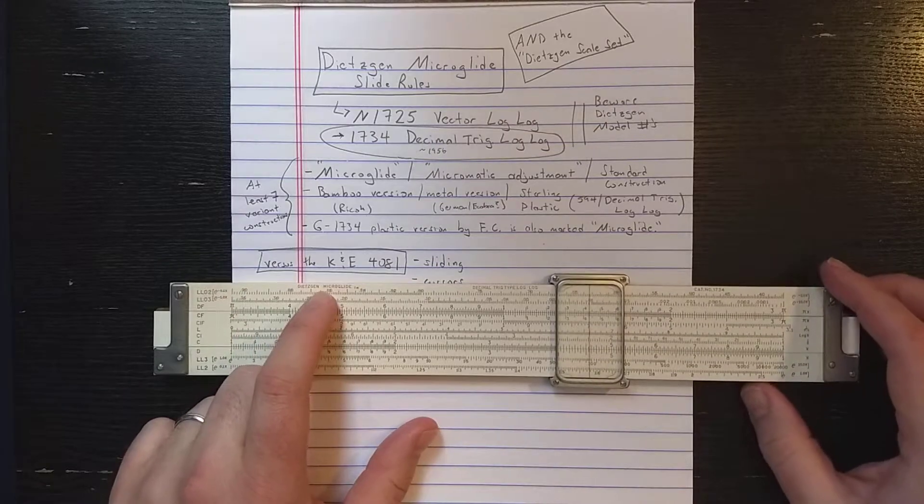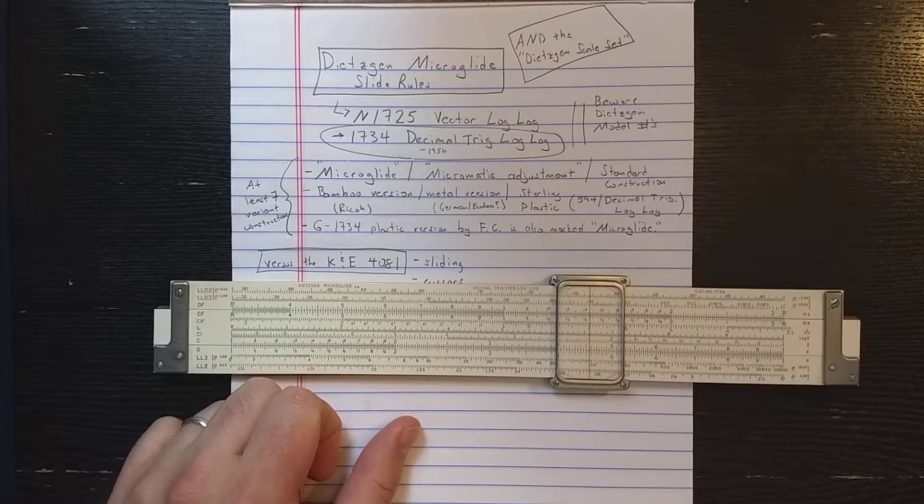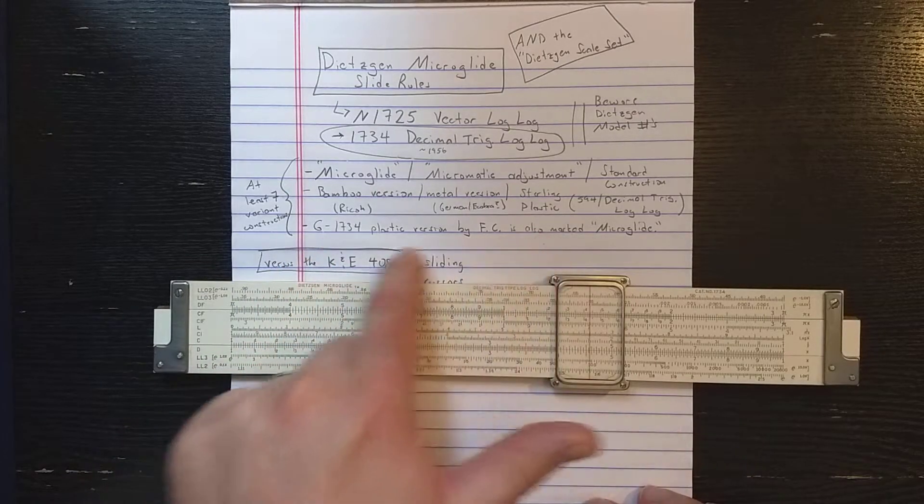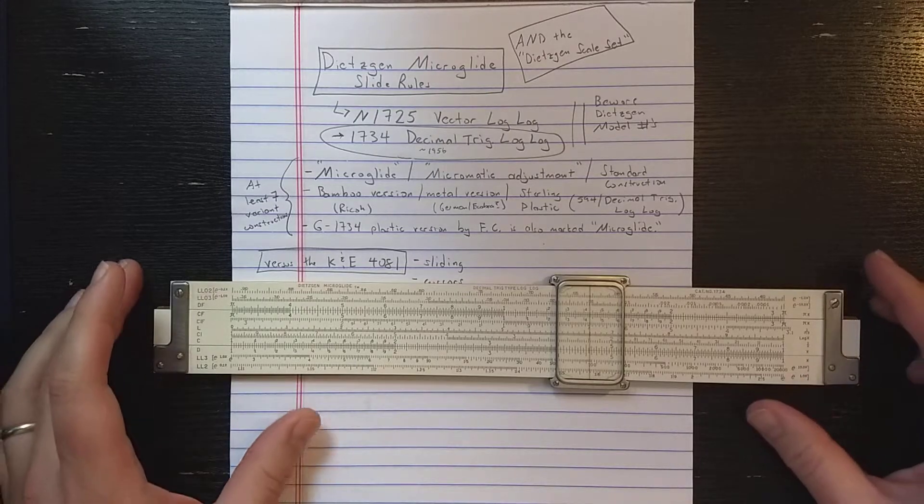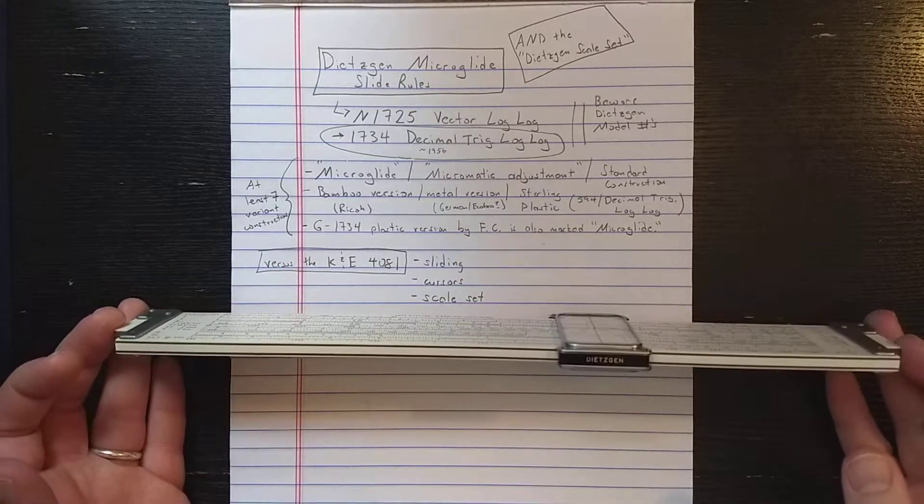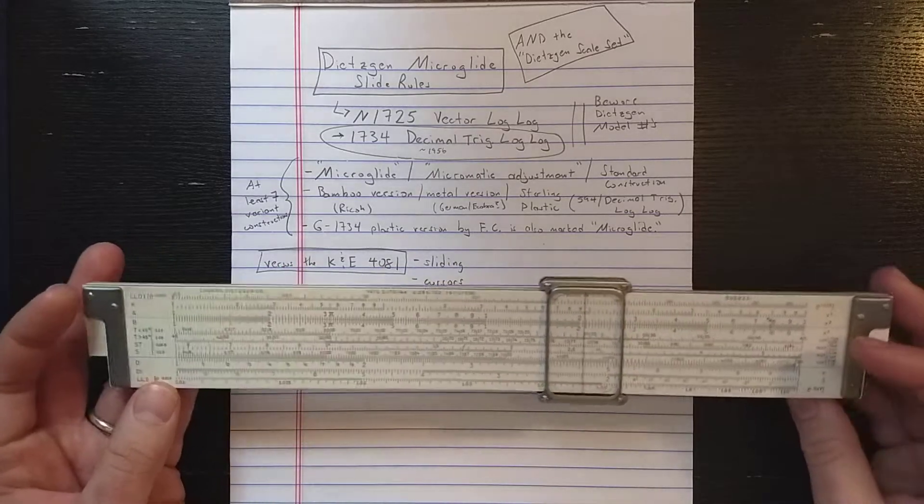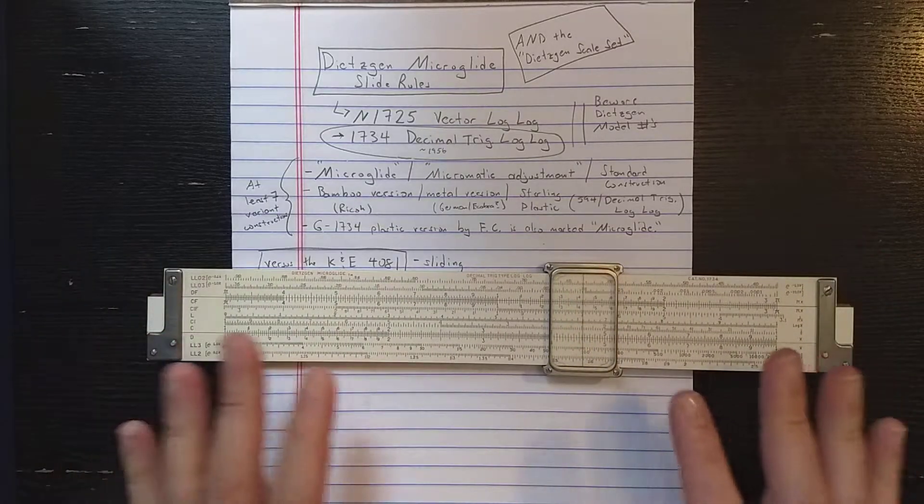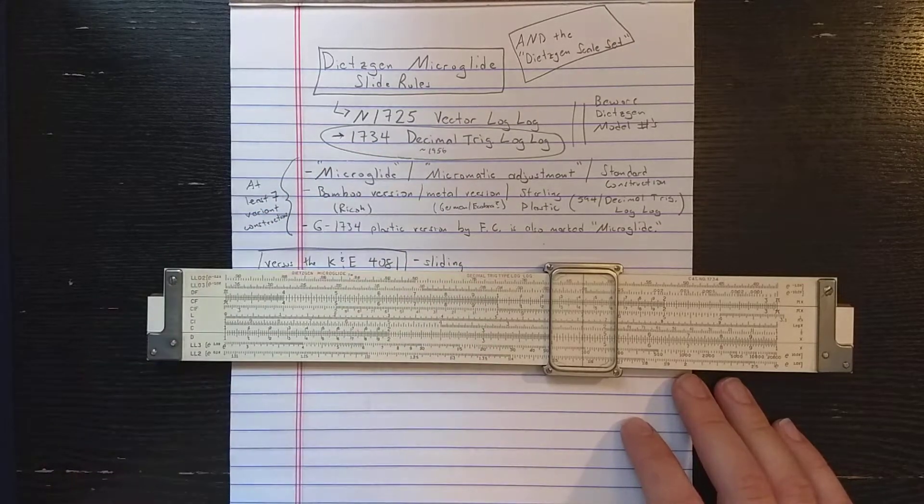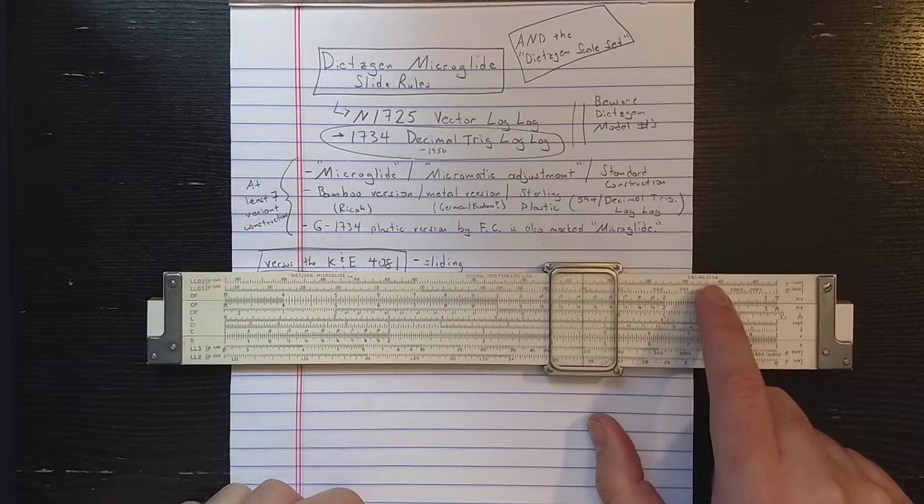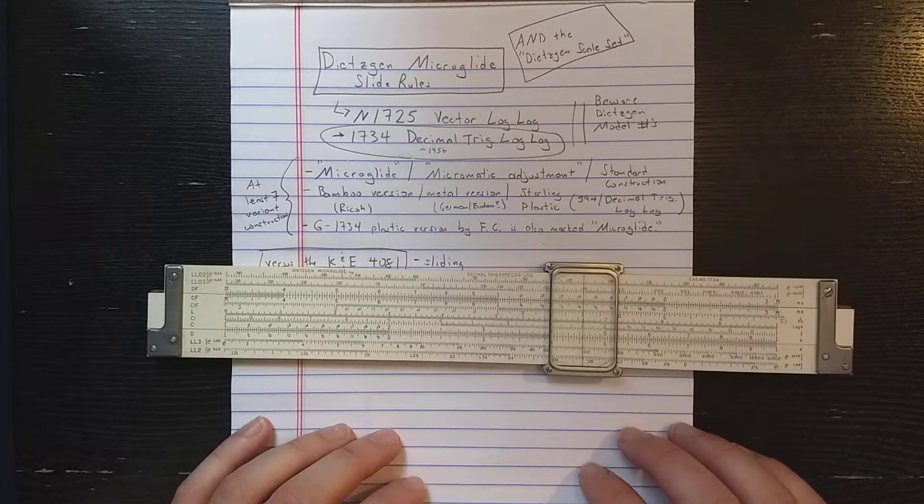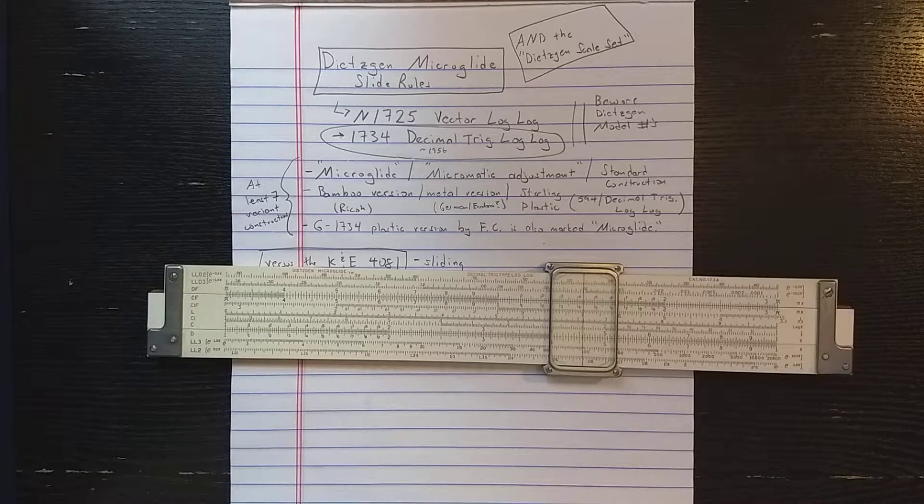You can spot them because they say microglide. The only thing you have to watch out for is that there are some plastic versions of this slide roll made by Faber-Castell that are also marked microglide. But you want to look for one with this classic wood frame construction. Besides this slide roll, there is a vector log log slide roll, usually marked N1725. This is the 1734. But Dietzen model numbers are very confusing. They use the numbers over and over again for different slide rolls, so you want to be careful.